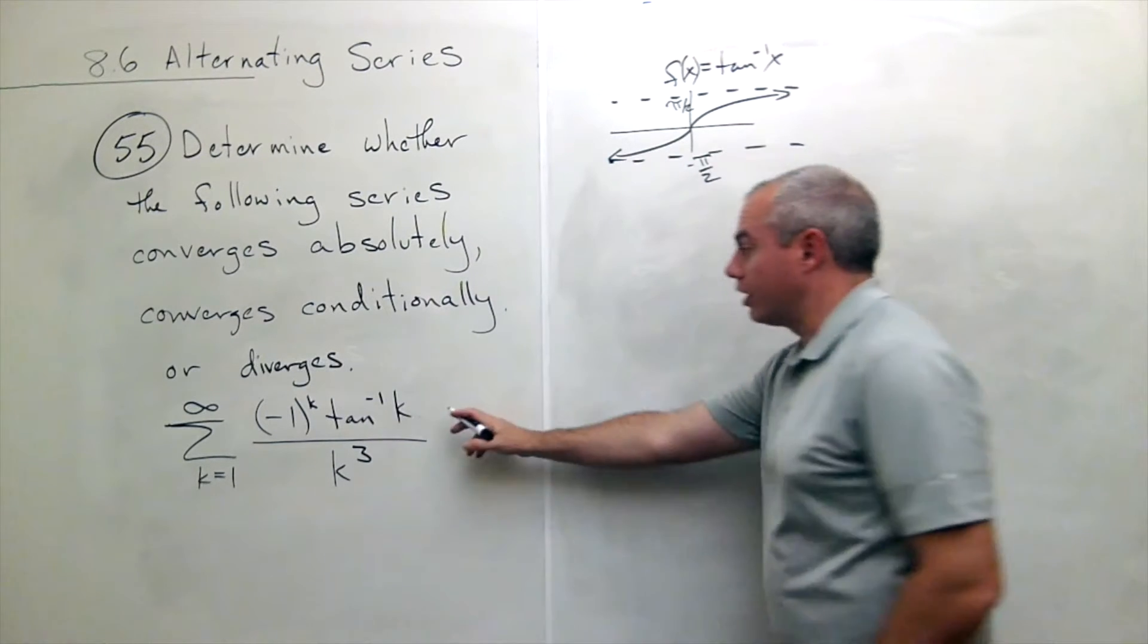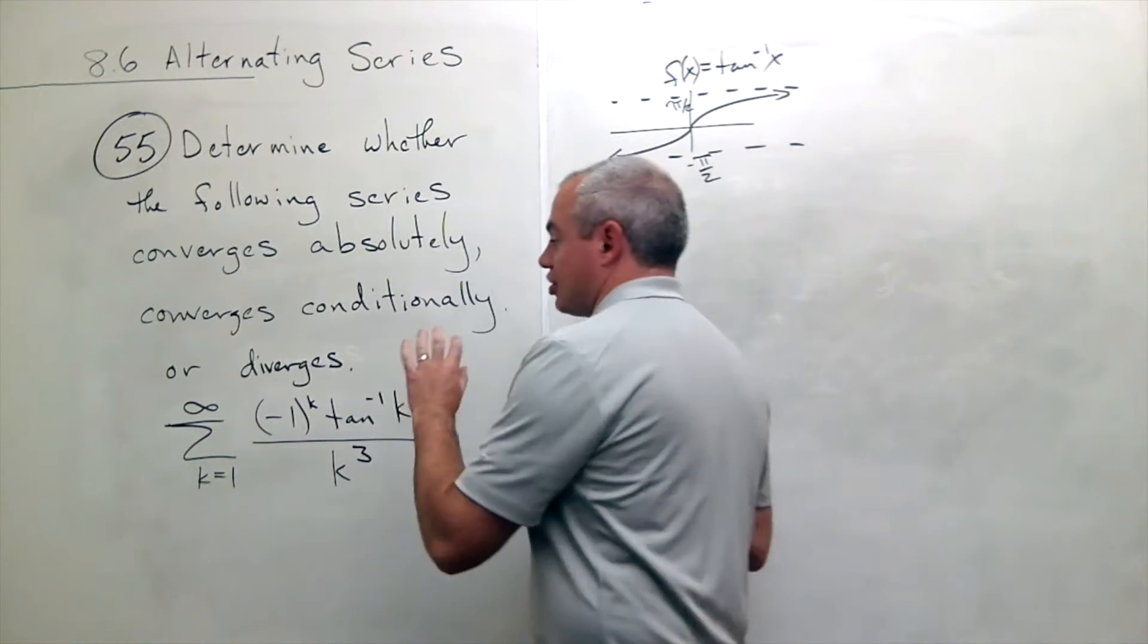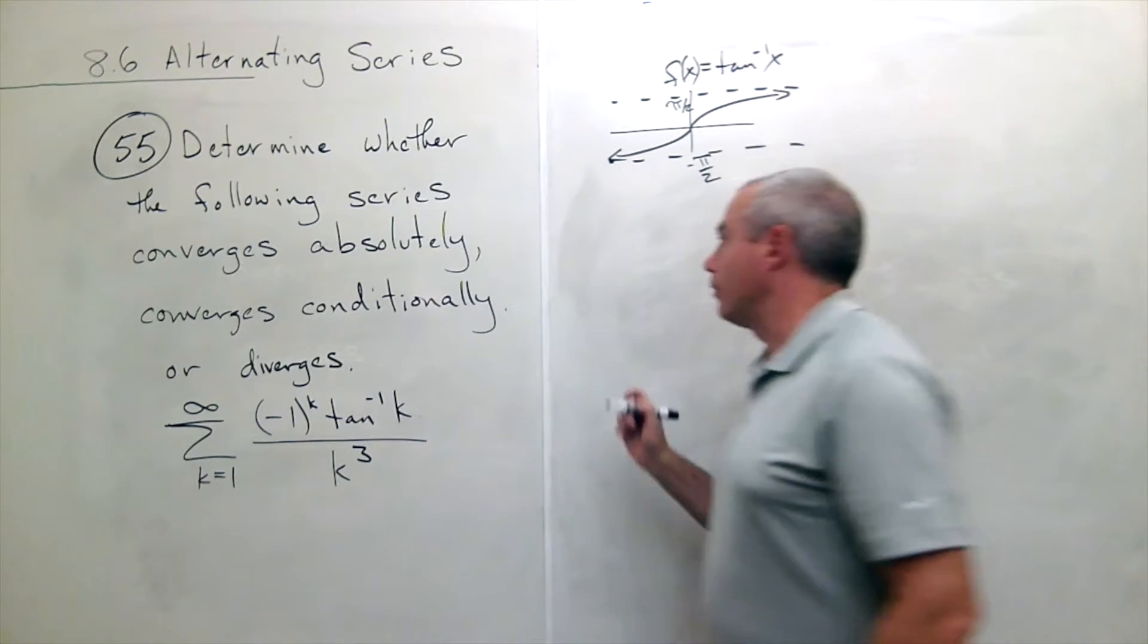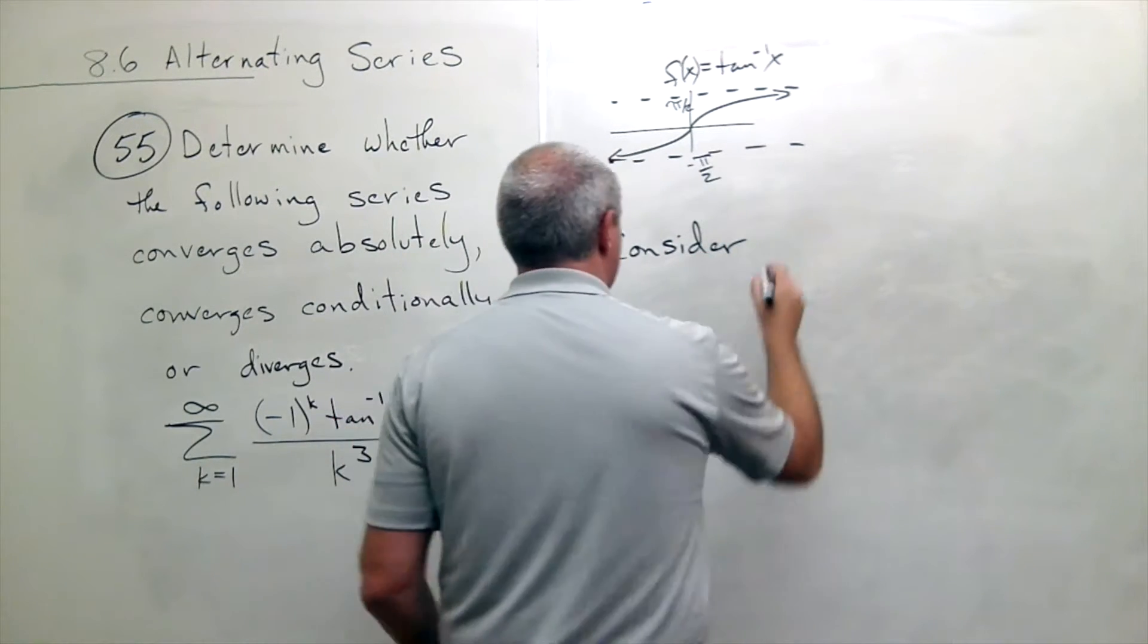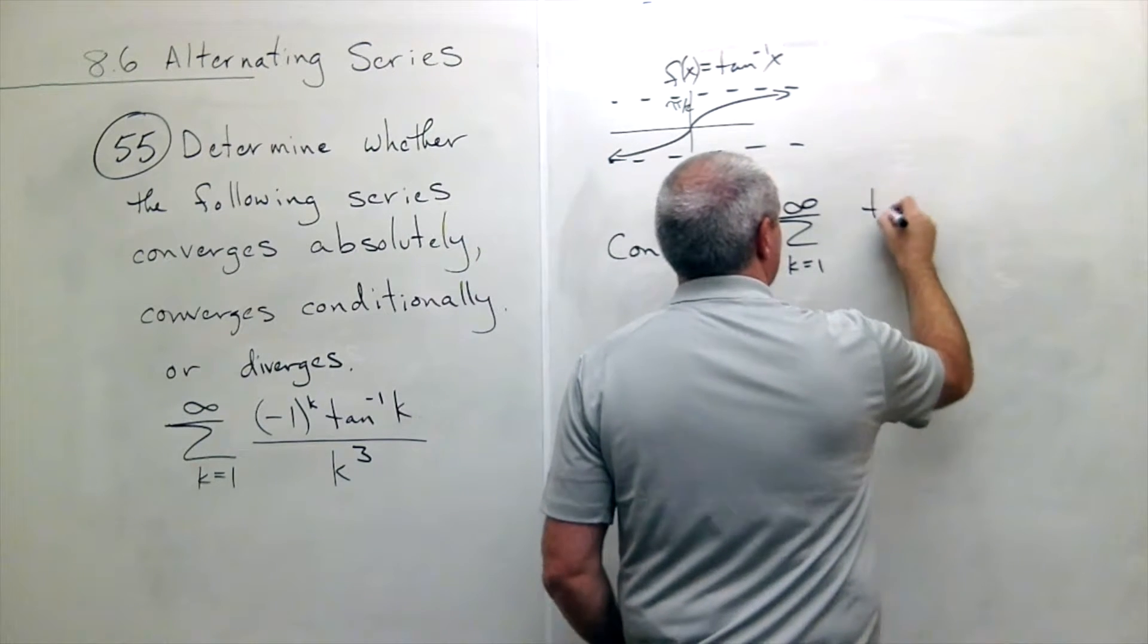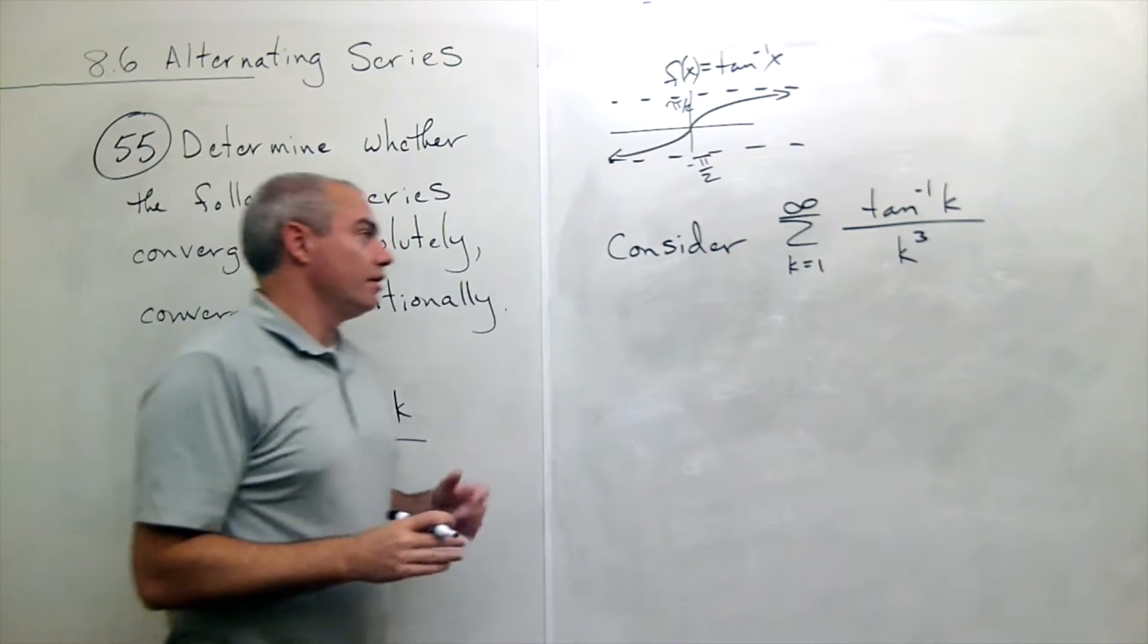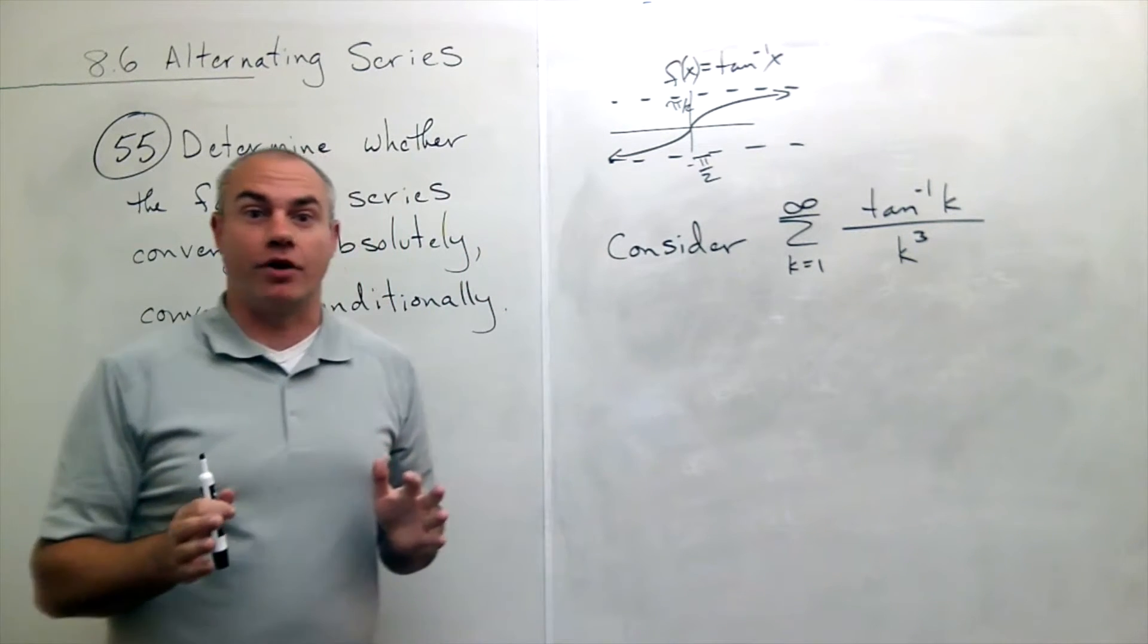Alright, so now I want to know, does this guy converge absolutely? So to figure out if this guy converges absolutely, I just need to get rid of the negatives. So I just need to get rid of this negative one to the k, because tan inverse of k, for k positive, it's always positive. So I want to consider the sum k going from 1 to infinity of tan inverse of k divided by k cubed. Alright, so this is this exact series, just written with everything positive, no negatives involved anymore in the terms.